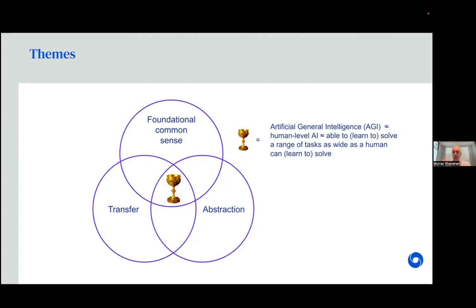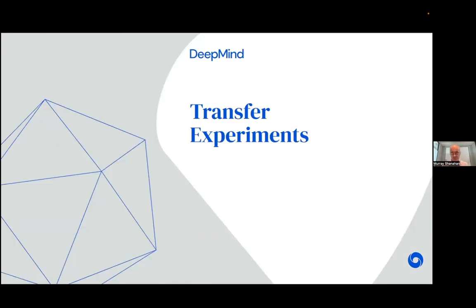Just to be clear, because these terms get thrown around a lot: what I mean by artificial general intelligence or AGI is roughly human-level AI — the ability to learn to solve a range of tasks as wide as a human being can learn to solve. It's foolish to try to define this precisely, hence the wavy lines, but that's an approximation. I should give you a heads up that I'm not going to tell you how to solve these things at all. On the contrary, I'm going to be raising a whole lot of problems and describing a whole lot of issues.